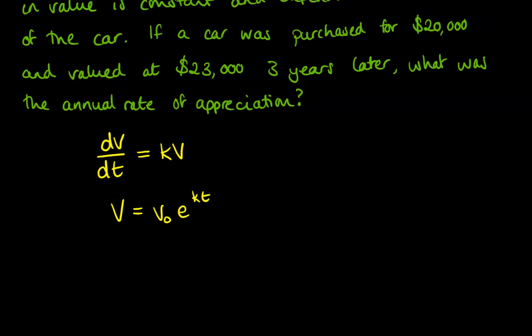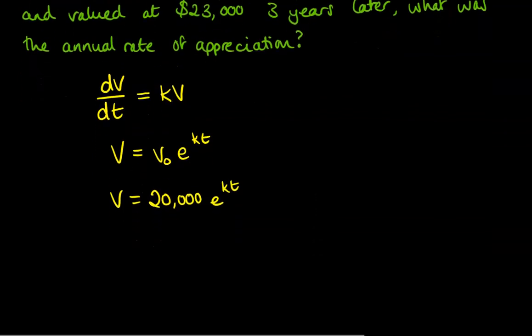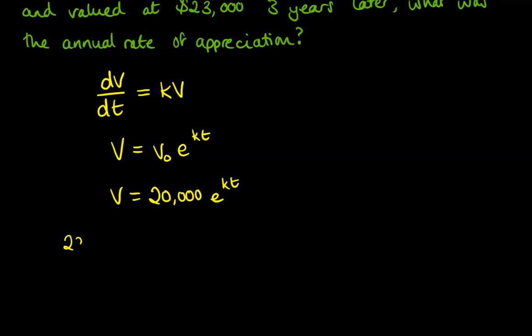So our initial value was $20,000. So we can pop in our 20,000 here, and we get our equation looking like this. Now the next bit of information is that three years later it's $23,000. So we know that we can get a value of 23,000 if we put in that t is 3. So we would get this equation.